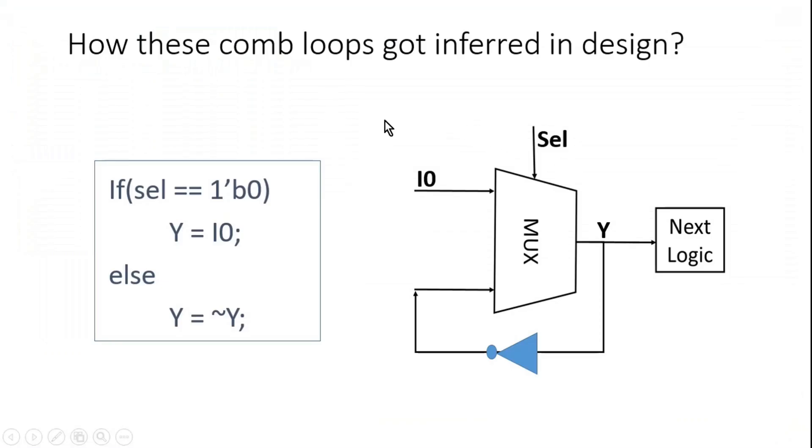Now let me discuss how combinational loops got inferred inside our design. Let me take a very simple example so that you can correlate it with our previous example where latch was introduced. I have introduced the else statement and I have written y is equal to not of y. Now how will this be implemented?